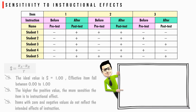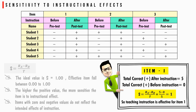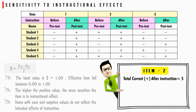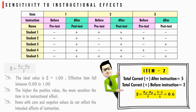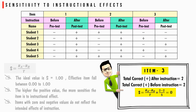For item number 1, total correct responses after instruction is 5 and before instruction is 0, so S = (5 − 0) / 5 = 1 — teaching is effective. For item number 2, correct responses after instruction is 5 and before is 2, giving S = 0.6 — teaching is effective. For item number 3, correct responses after and before instruction are both 2, so S = 0 — teaching instruction is not effective for item number 3.